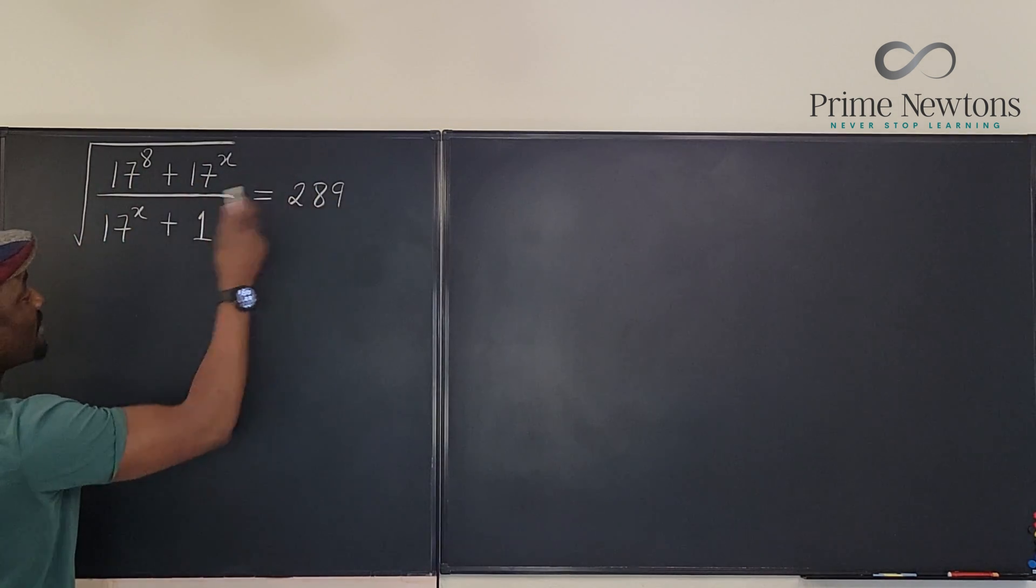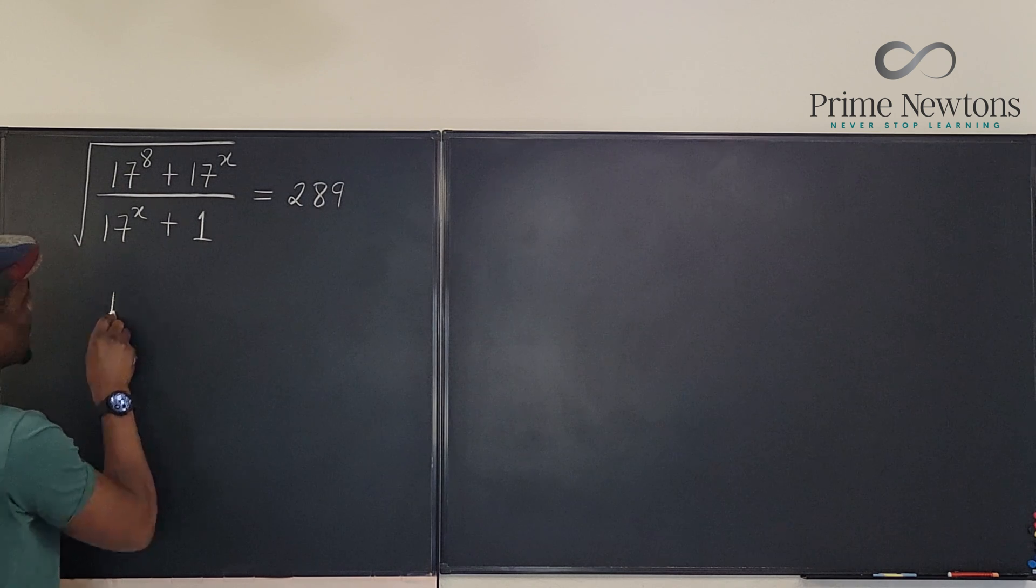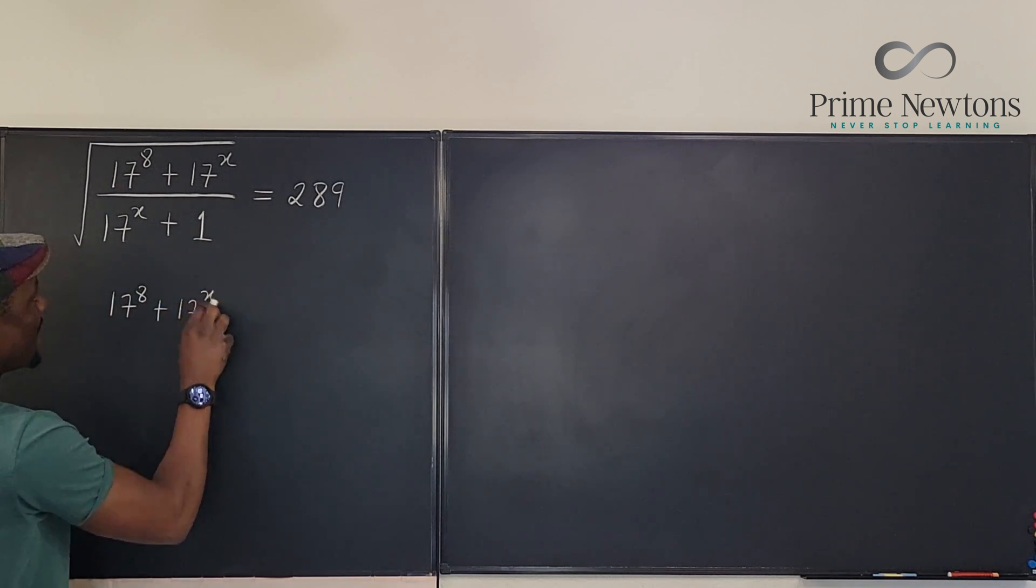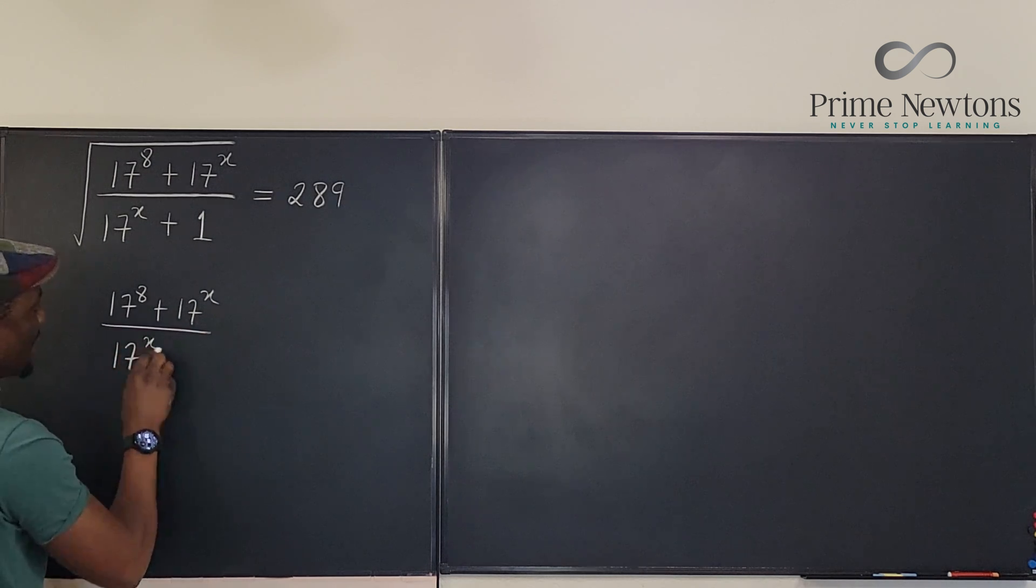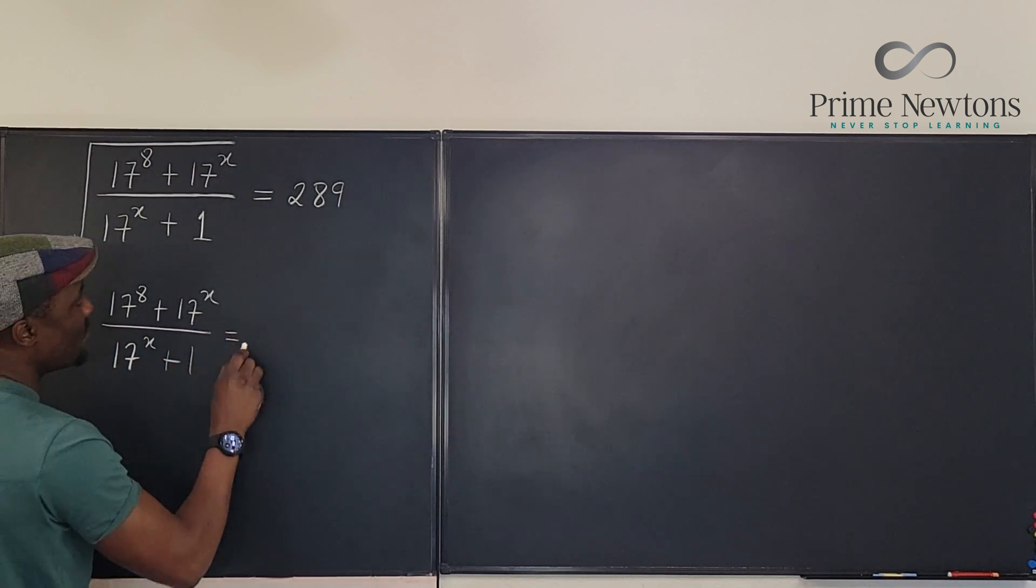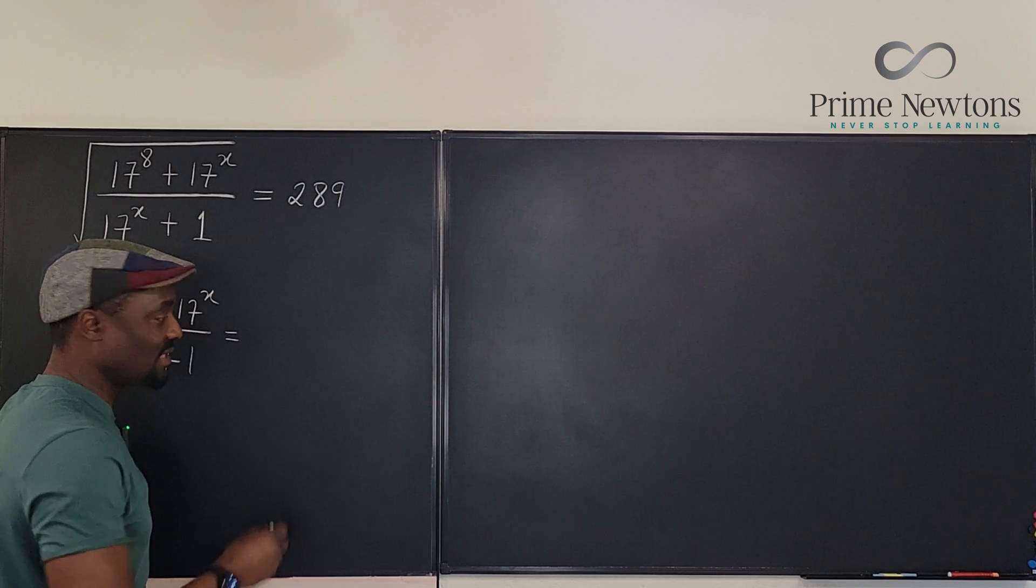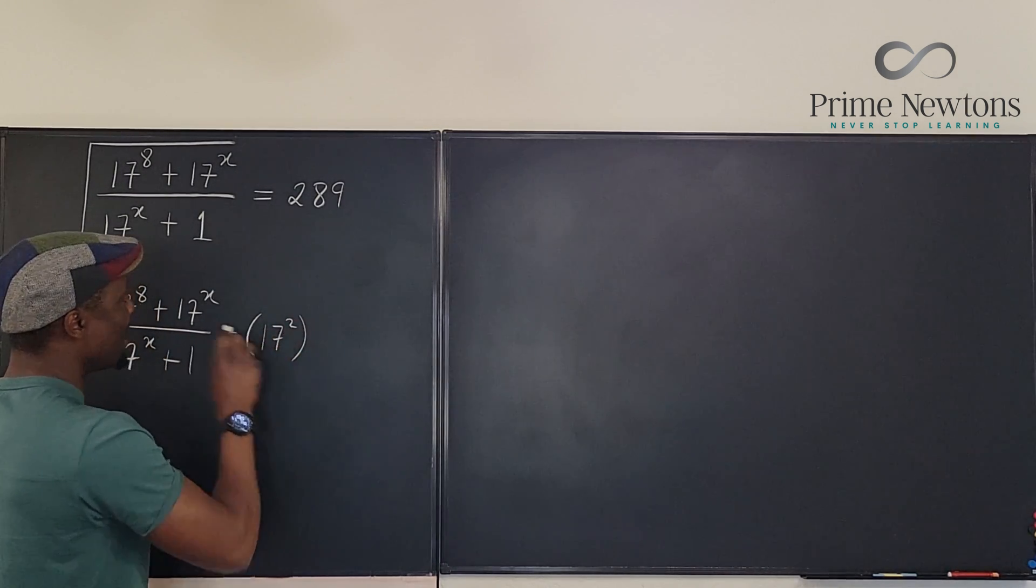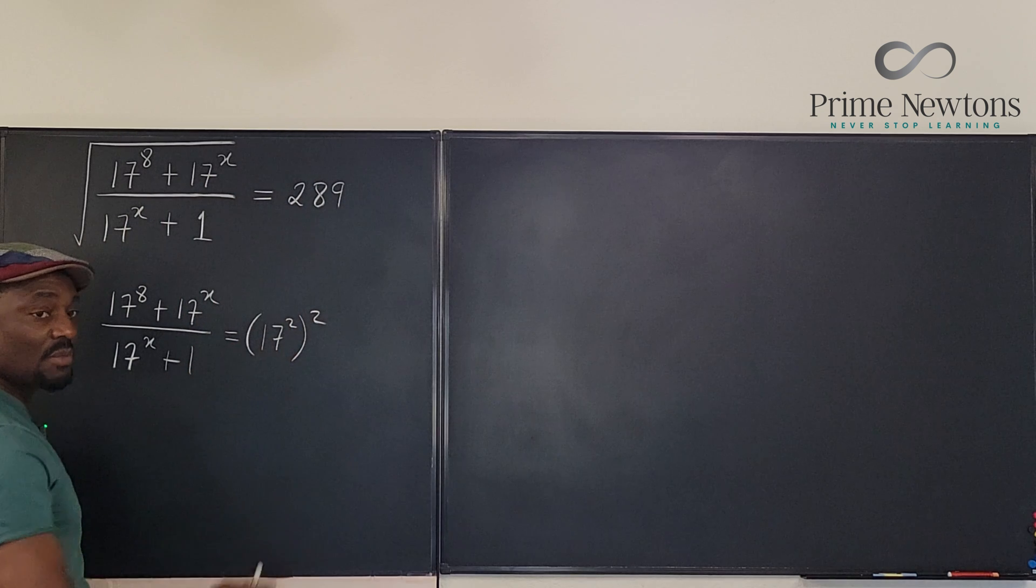So I'm going to get rid of this by squaring both sides. So this is going to be 17 to the 8th plus 17 to the X over 17 to the X plus 1 equals. Remember this, I can write as 17 squared. That's 289. Then I'm going to square it because I'm squaring both sides.